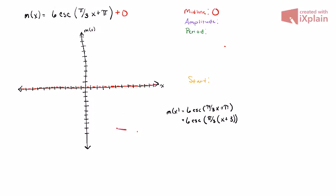The next thing is amplitude. Amplitude is the value that is our vertical stretch or compression. In this case, we're doing a vertical stretch since it's greater than one, so our amplitude is 6.